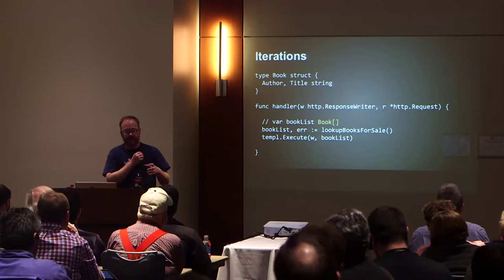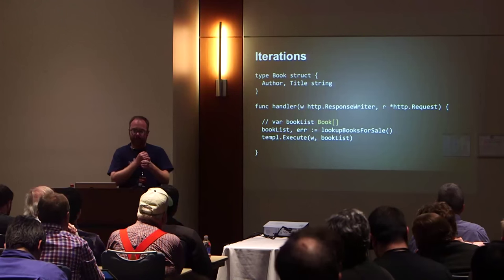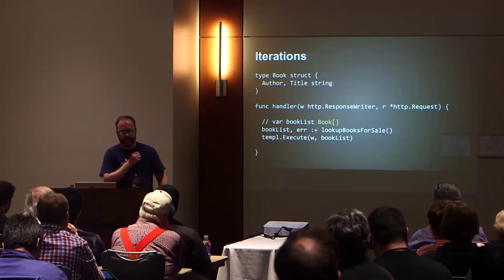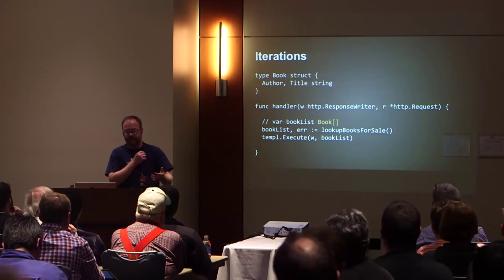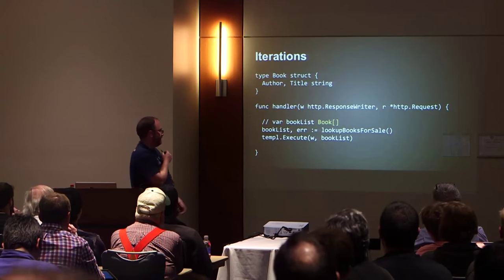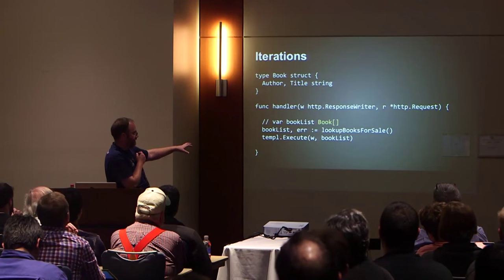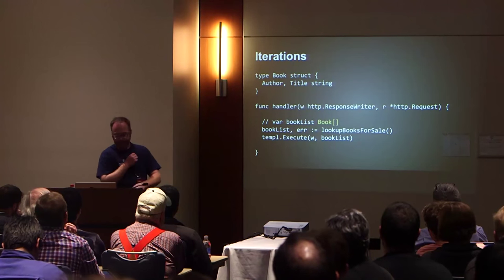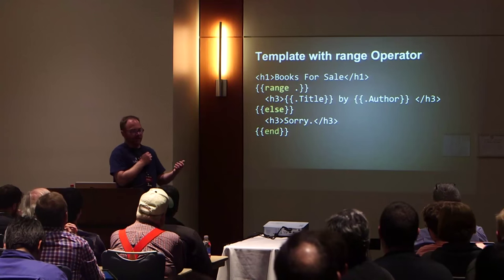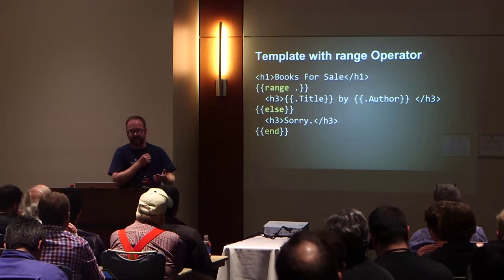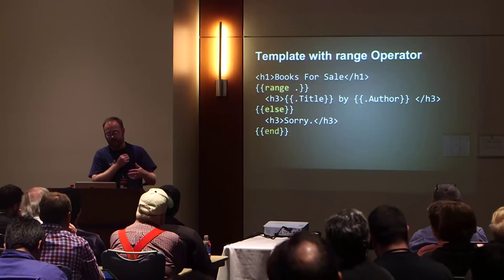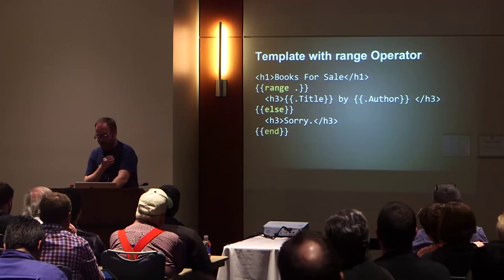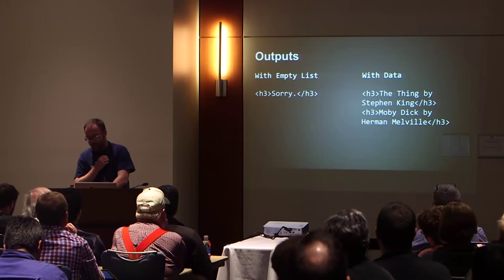Here's some Go code that creates what's called a slice of types. A slice is like an array, except in Go it has a bit more smarts — it can keep track of its own size. In this case you have a variable book list which is a slice of books, which is a structure. You call some function like 'lookup books for sale' and execute the template. In your template you have a range operator — you can range over the slice and render H3s, or if it's empty, do that instead. You get this output that saves you a lot of time.